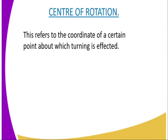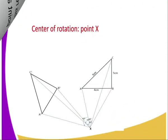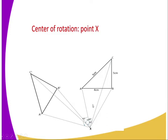The center of rotation refers to the coordinates of a certain point about which turning is effected — where the turning effect takes place. On this diagram, we represent the turning point as point X. As far as the object triangle and the image triangle are concerned, the object is turned about point X, and therefore point X becomes the center of rotation.